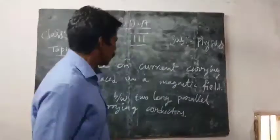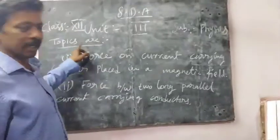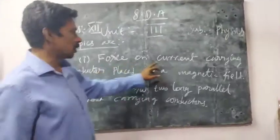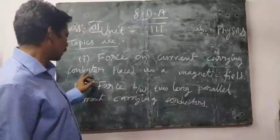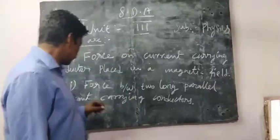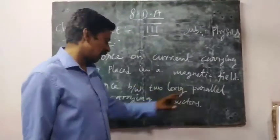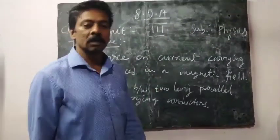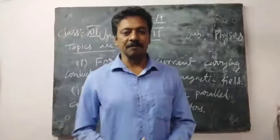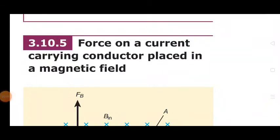Hi children. Today's topics are: force on a current carrying conductor placed in a magnetic field, and force between two long parallel current carrying conductors, and also some other topics. Today's first topic is force on a current carrying conductor placed in a magnetic field.